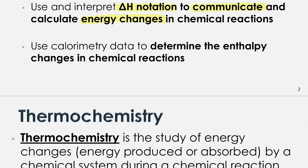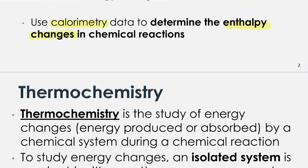Lastly, we're not going to get to it today, but using calorimetry — that's the experimental method we use to look at energy changes in chemical reactions — we'll use data from calorimetry experiments to determine the enthalpy changes that are happening. So we'll be doing some calculation work there.